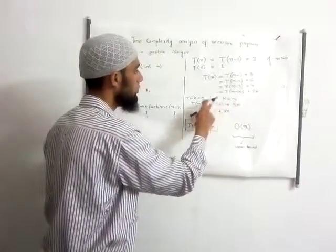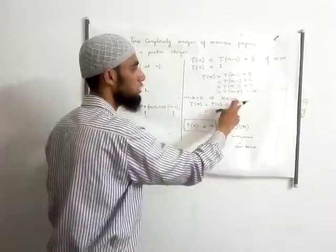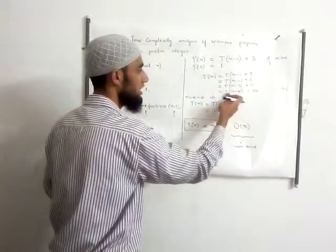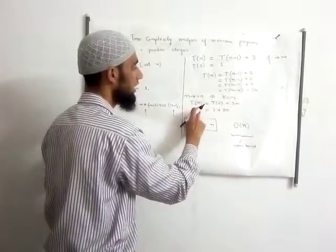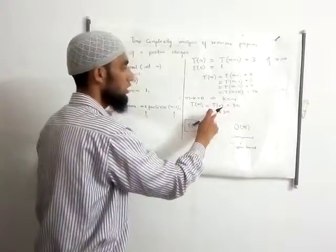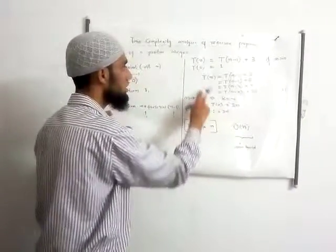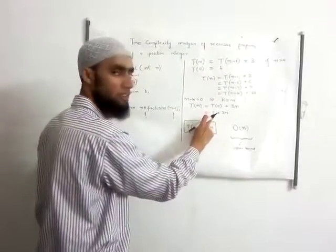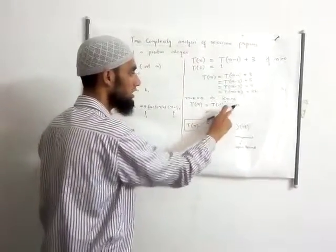So again we shall substitute these values into this equation and this equation will become T of n equal to T of 0 plus 3n. So the value of T of 0 is 1. So we have written down 1 plus 3n.